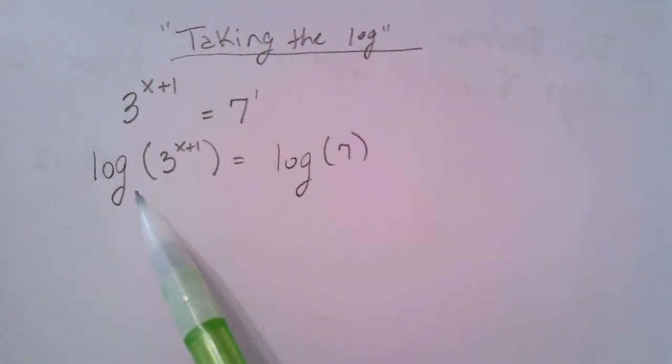So notice here that the bases on my logs, which are not shown, they're understood to be 10, is the same. So I'm saying this exponent, because logs are exponents. So this whole exponent has a base of 10. This whole exponent has a base of 10. And why couldn't I just do that? So the answer is that you absolutely can.